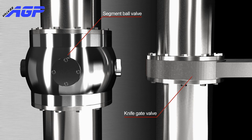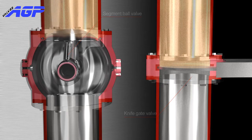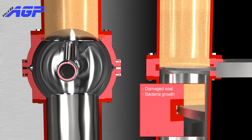Finally, the segment ball valve is compared to the knife gate valve. The valve's knife pushes product into the sealing area when closing. Product is entrapped and pinched, which results in valve jamming and excessive seal wear. The segment ball valve allows product to flow freely past the seal and does not interrupt product flow.